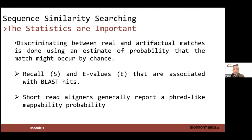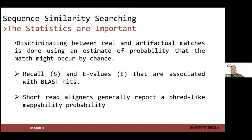Statistics are important in sequence similarity searching. We need them to discriminate between real alignments and artifacts — true positives versus false positives. We estimate the probability that a match might occur by chance. In BLAST, e-values are used, but in short-read aligners like BWA, a Phred-like mappability probability is reported.